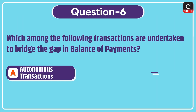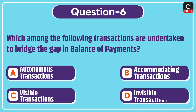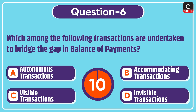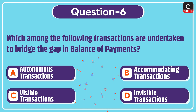Next question is: which among the following transactions are undertaken to bridge the gap in the balance of payments? Autonomous transactions, accommodating transactions, visible transactions, or invisible transactions? The correct answer is option B, accommodating transactions.